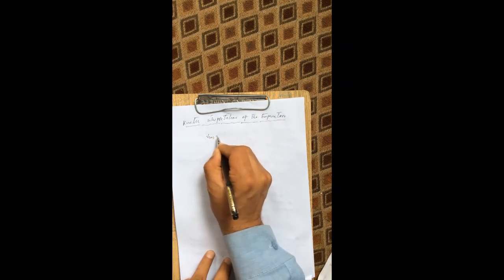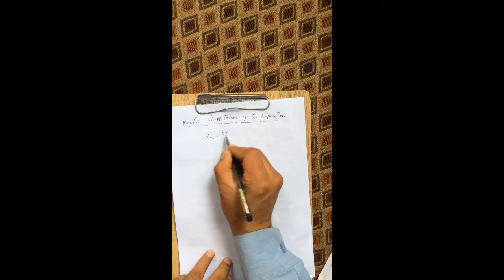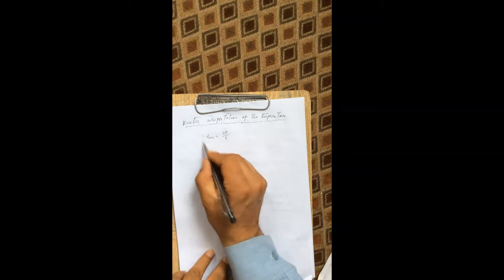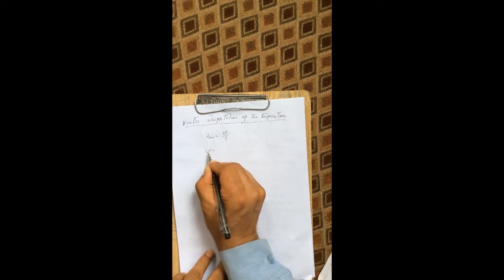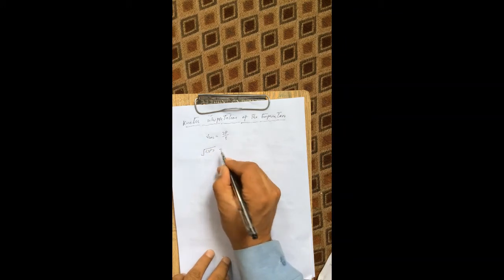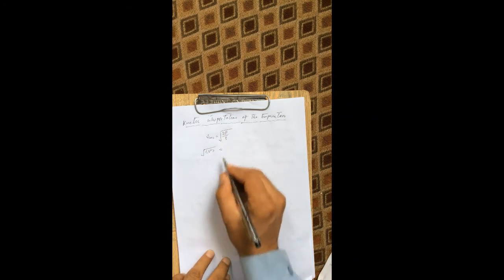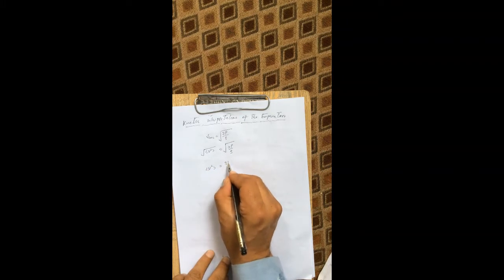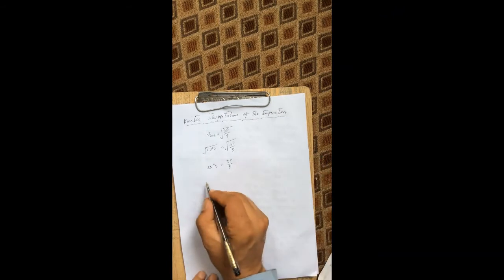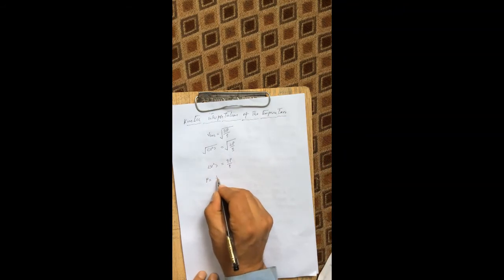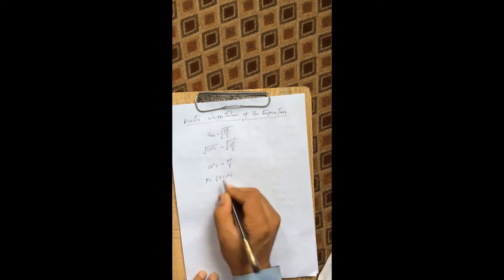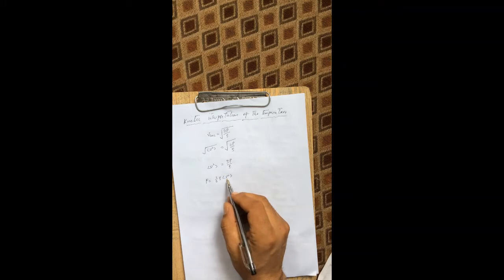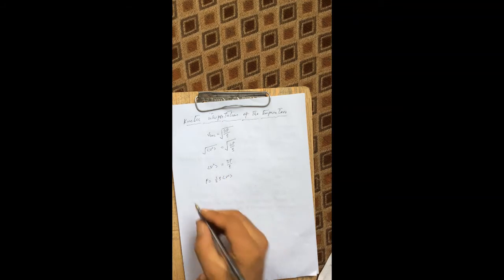The root mean square velocity v_rms is equal to the square root of 3p over rho. We can write the mean square velocity v² as equal to 3p over rho. From this, I can calculate the value of pressure: p is equal to one-third rho times v², where v² is the mean square velocity.